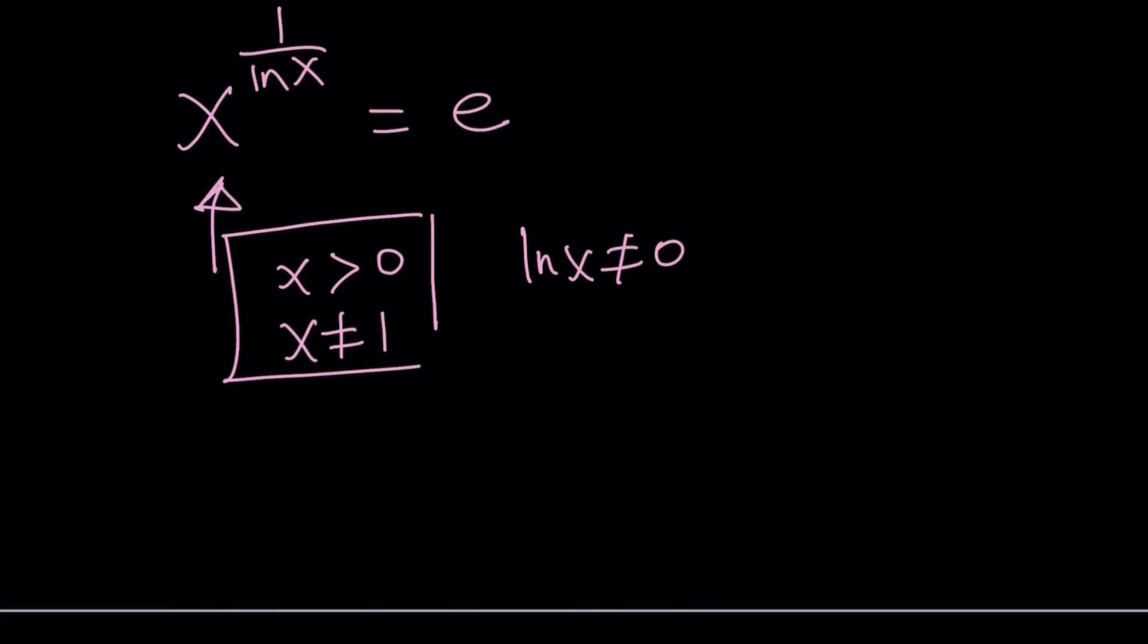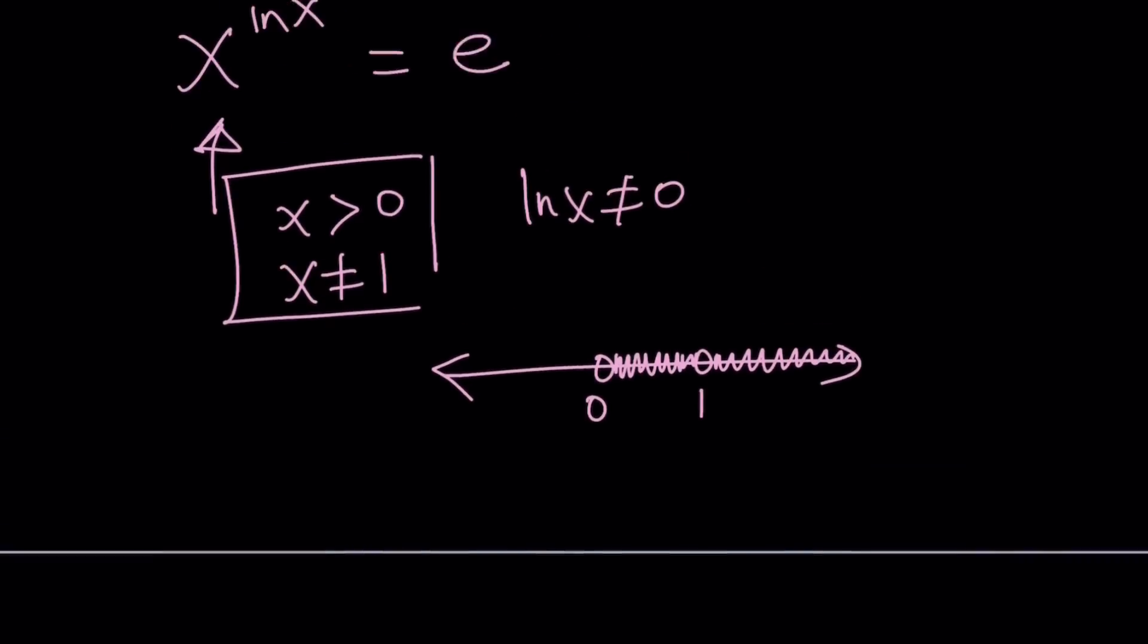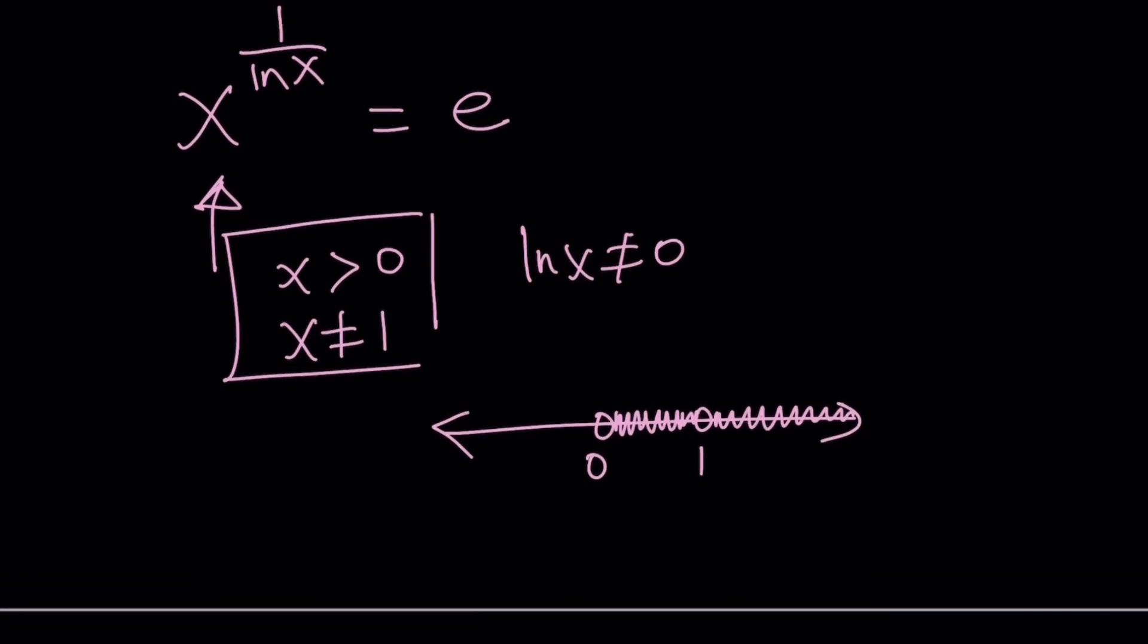x values such that x is greater than 0 and x is different from 1. That kind of gives us an interesting domain. It's kind of broken down. If you want to demonstrate or show it on the number line, we have 0, we have 1. You're basically talking about numbers that are between 0 and 1 and then numbers that are greater than 1, because you have to exclude 1. So it's actually a union of two intervals.